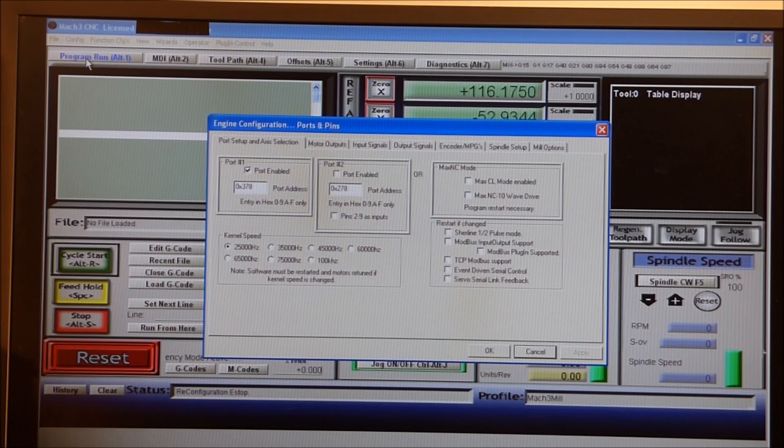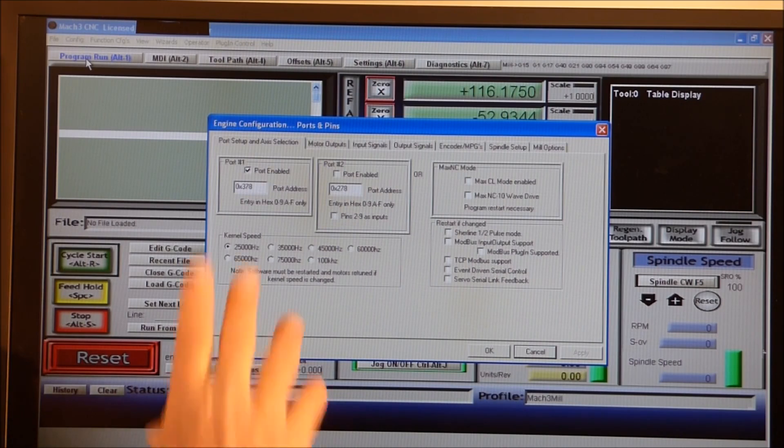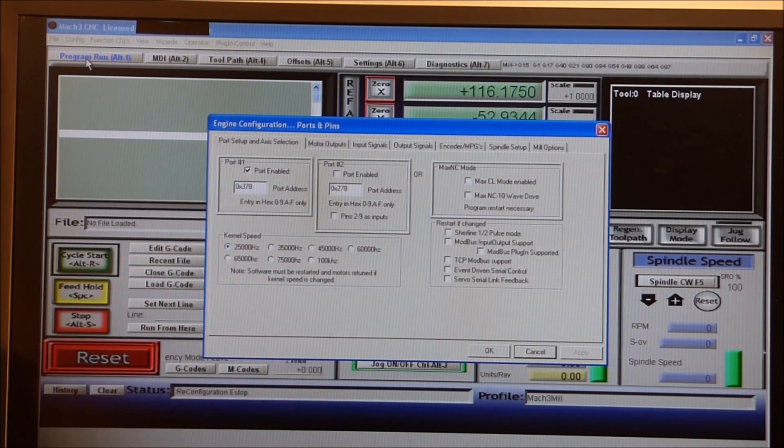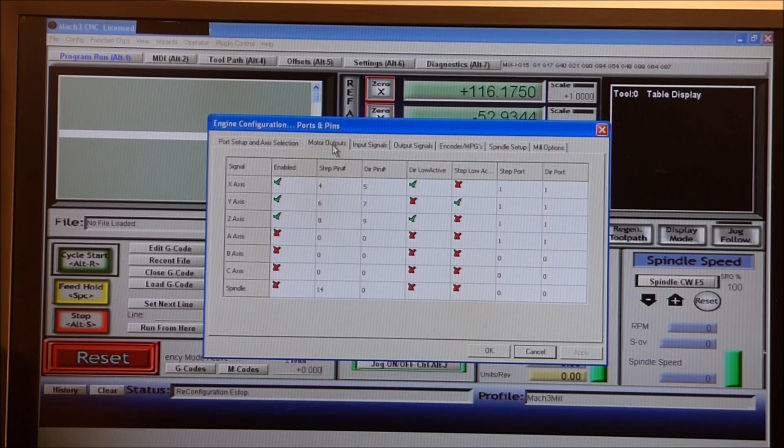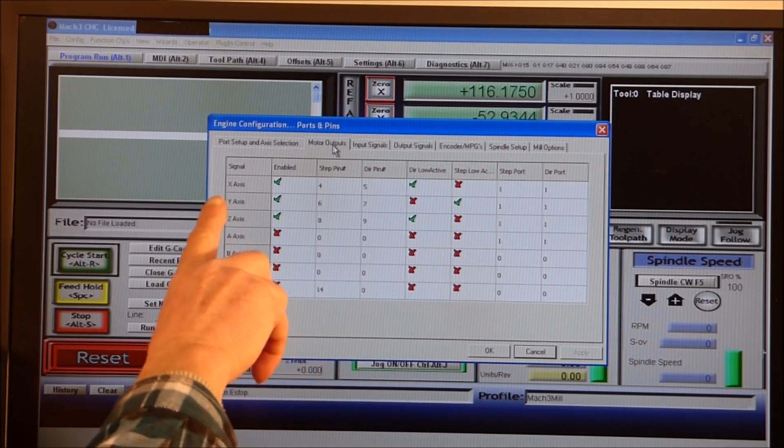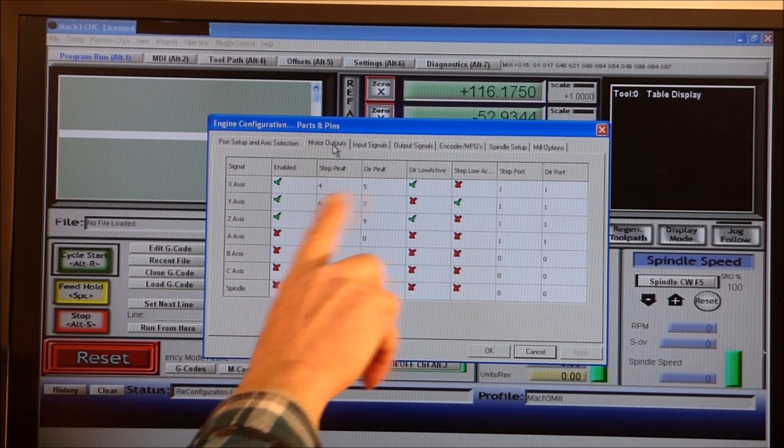Now your port on your computer might have a different address to this. This port here 278 is normally the old type 25 pin printer port. I'm using a different port on my machine to suit the card for Mach 3 that I have.